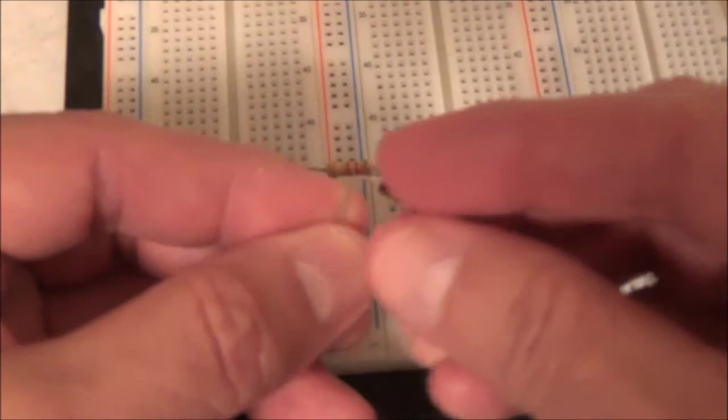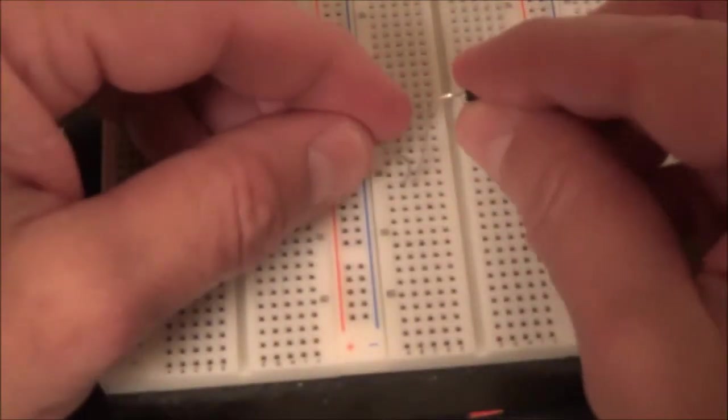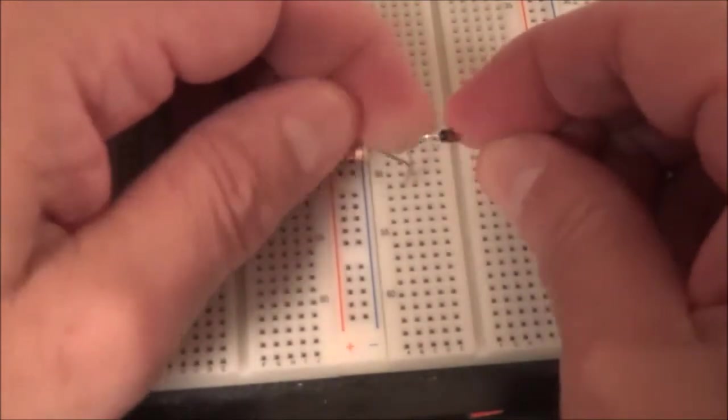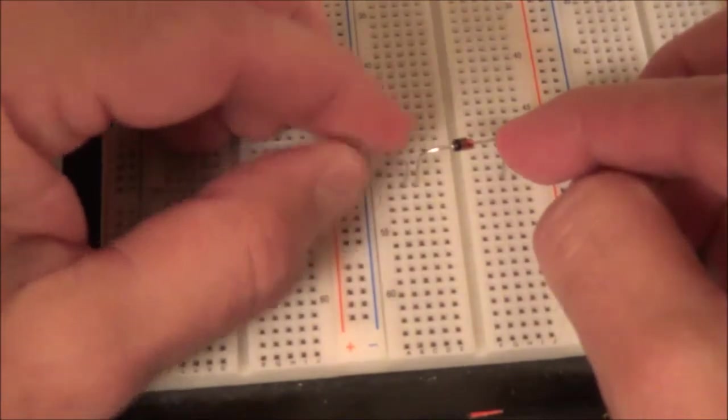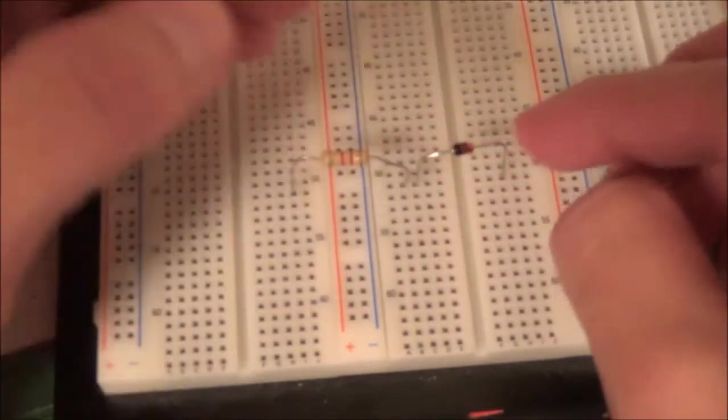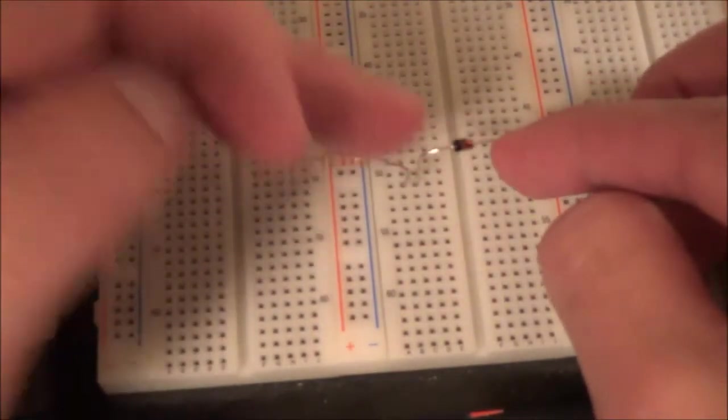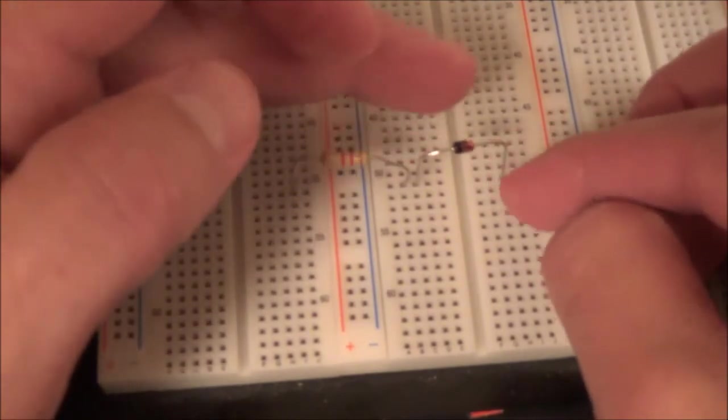Then across the zener, I'm going to put a DC voltmeter. You gotta remember that the zener is hooked up the opposite way of a normal diode.